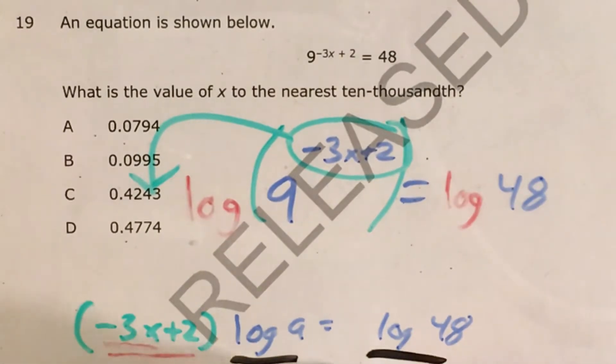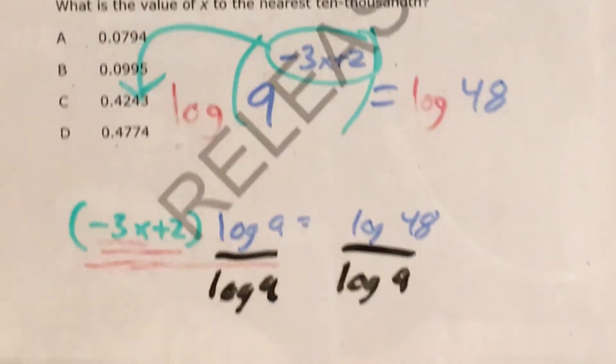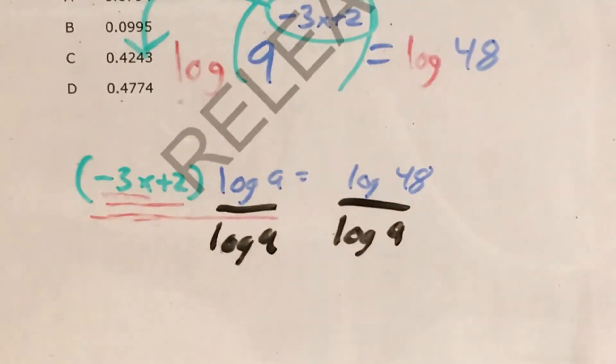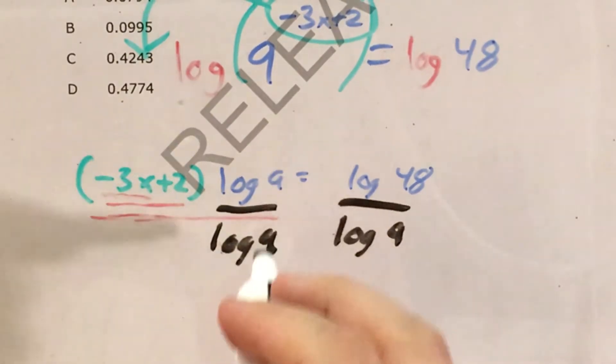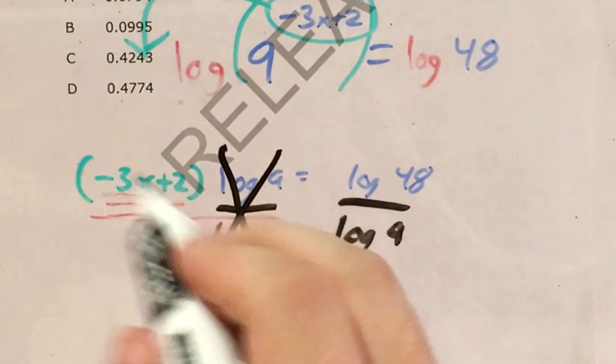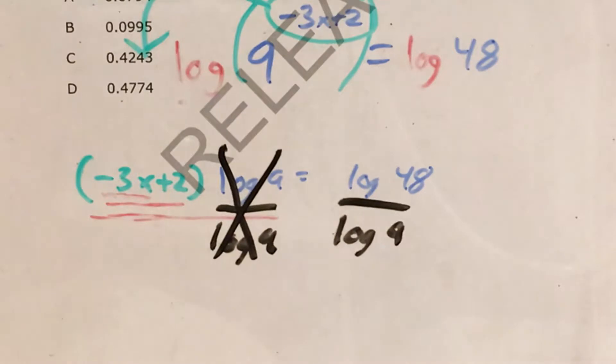Divide by log 9, divide by log 9. Let me scoot that up so you can see. Log 9 divided by log 9, I don't know exactly what this is, but the same number divided by itself is always going to cancel out or always come out to equal 1. And now I just need to figure out log 48 divided by log 9.